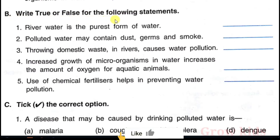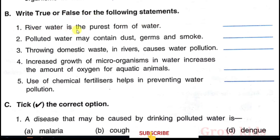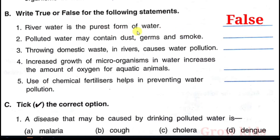Section B: Write true or false for the following statements. Question 1: River water is the purest form of water — False. Question 2: Polluted water may contain dust, germs and smoke — True.